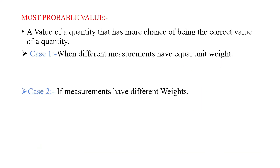So let's go to the Most Probable Value. What is the Most Probable Value? It is a value of a quantity that has the most chance of being the correct value. For example, measurements like 1.1, 1.01, and 1.03 — you cannot predict the exact correct value from all these measurements, so we average them. That average is a type of Most Probable Value, and in that case the unit weight is taken as one.